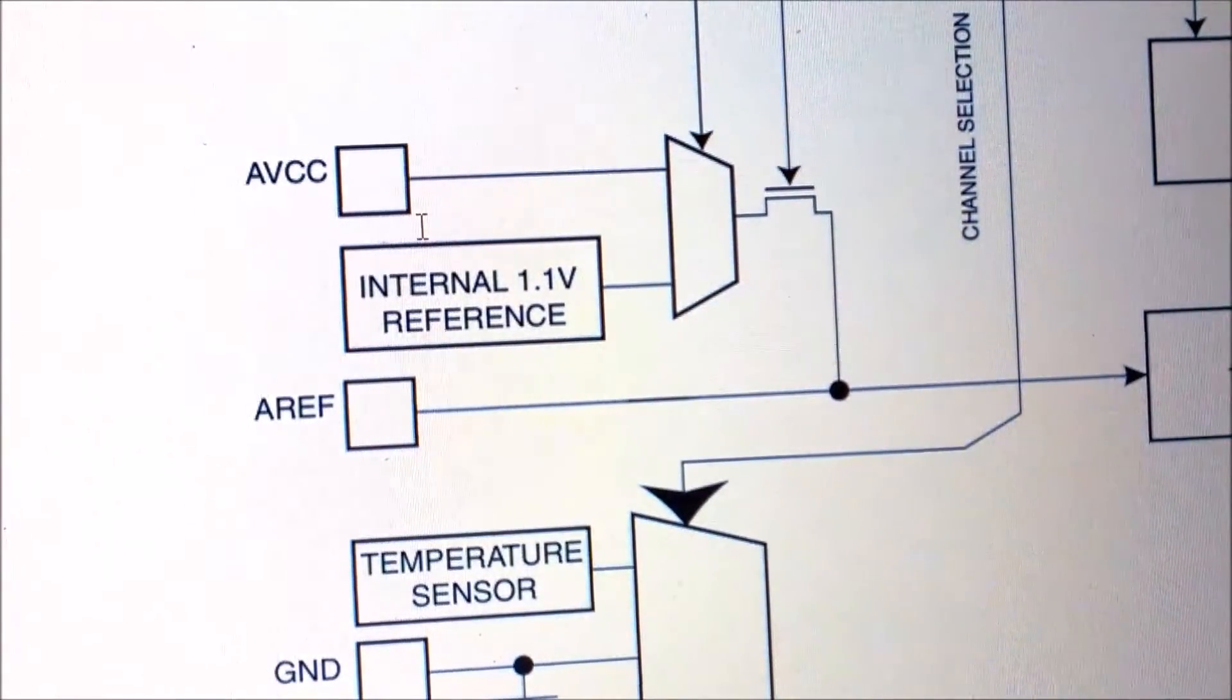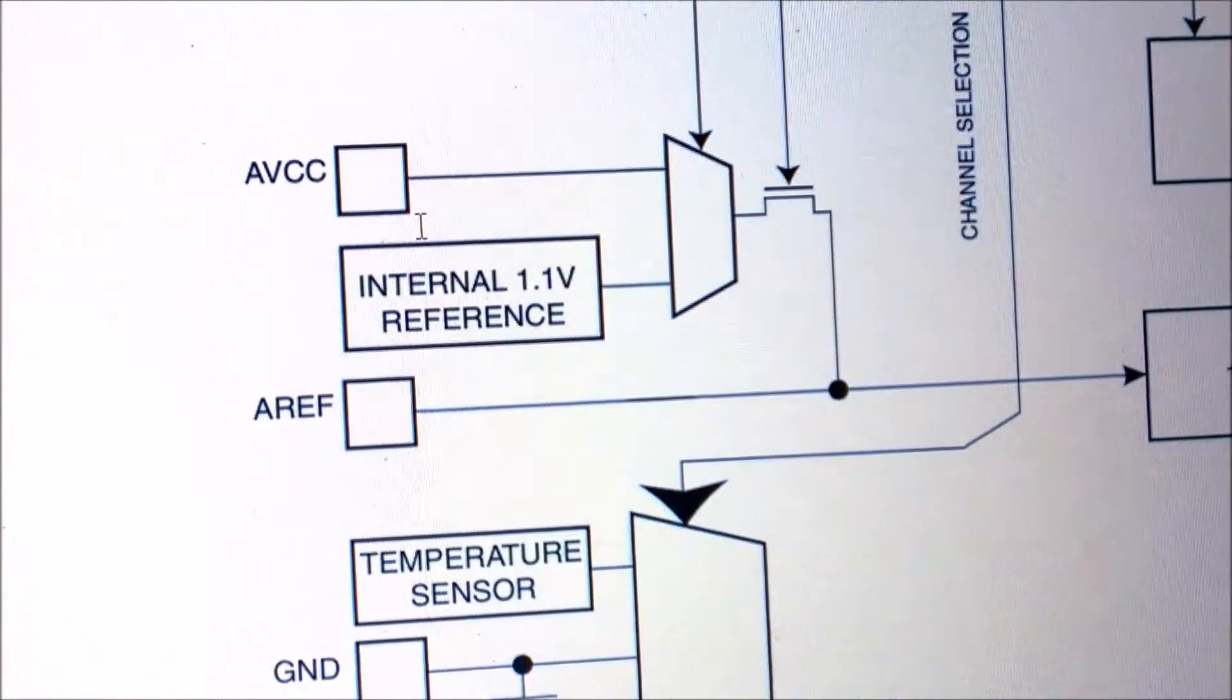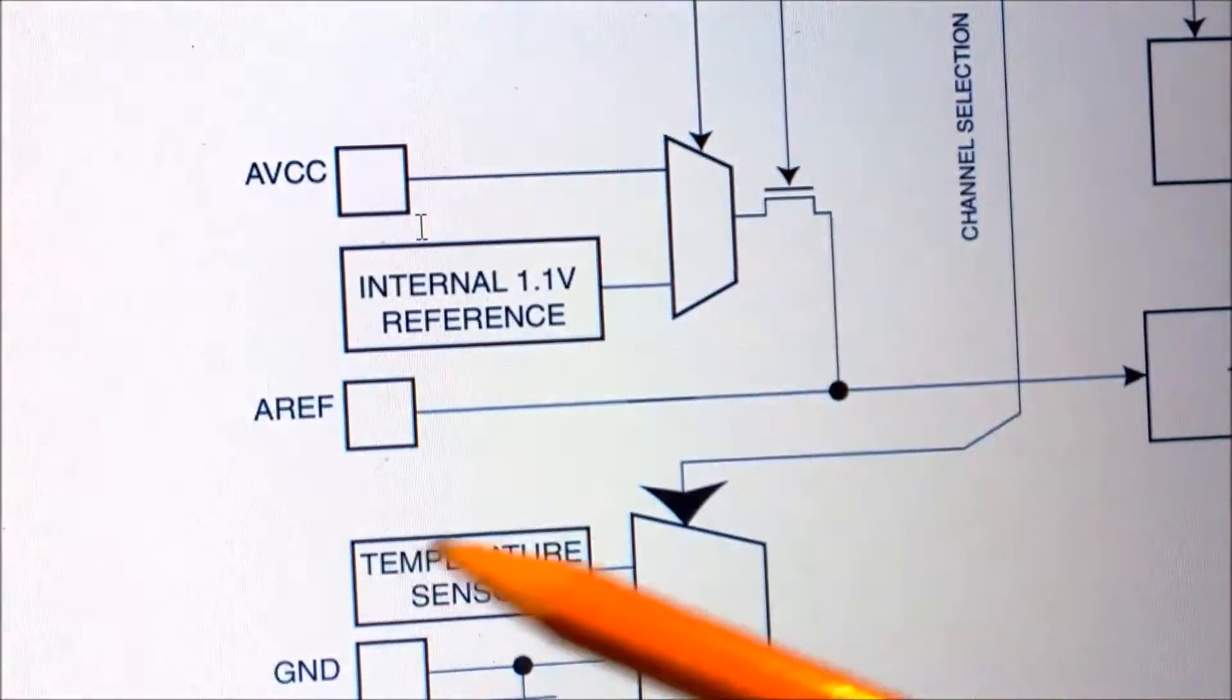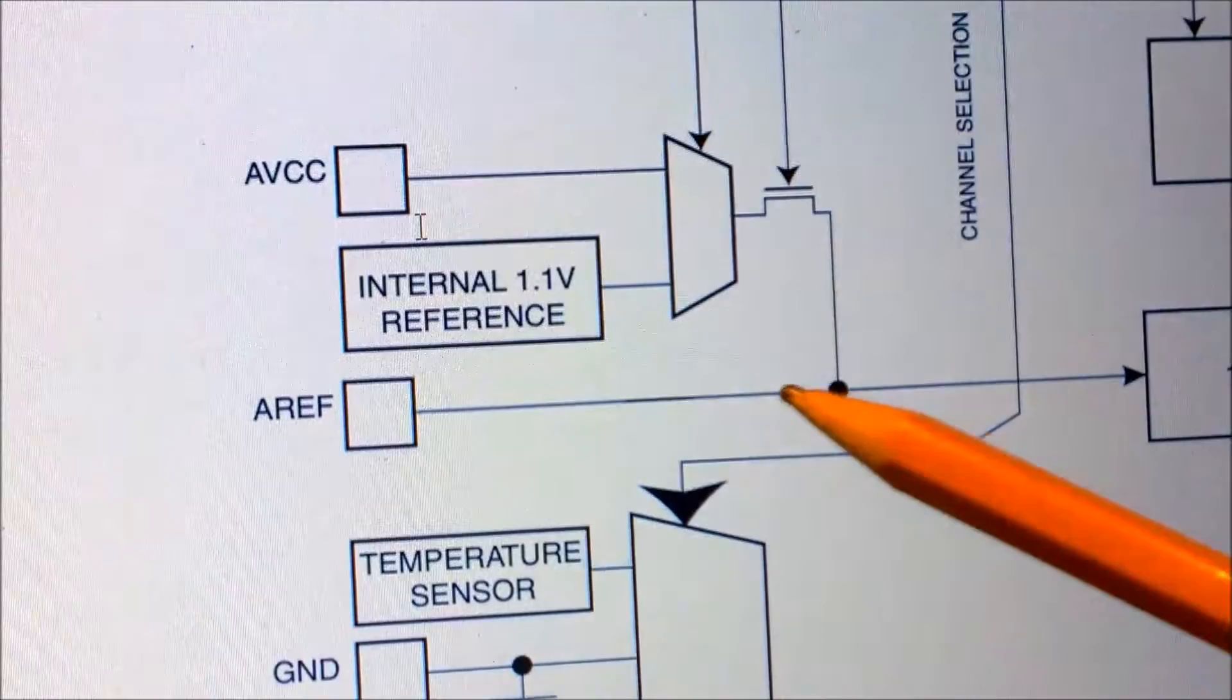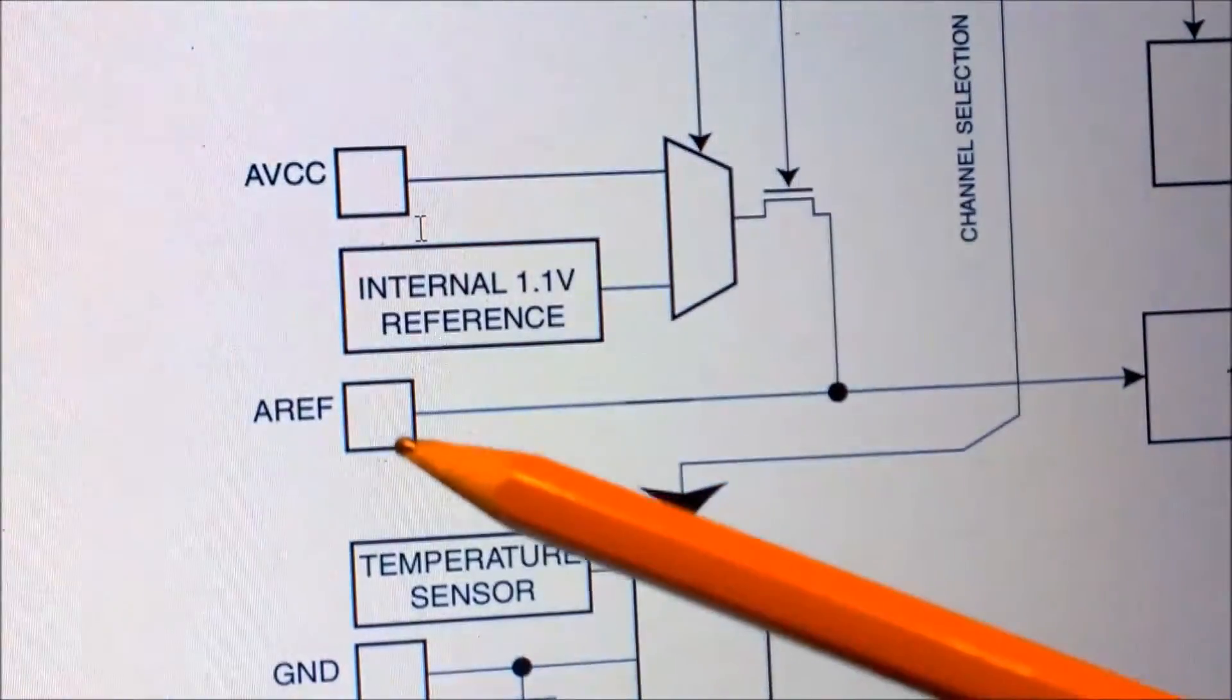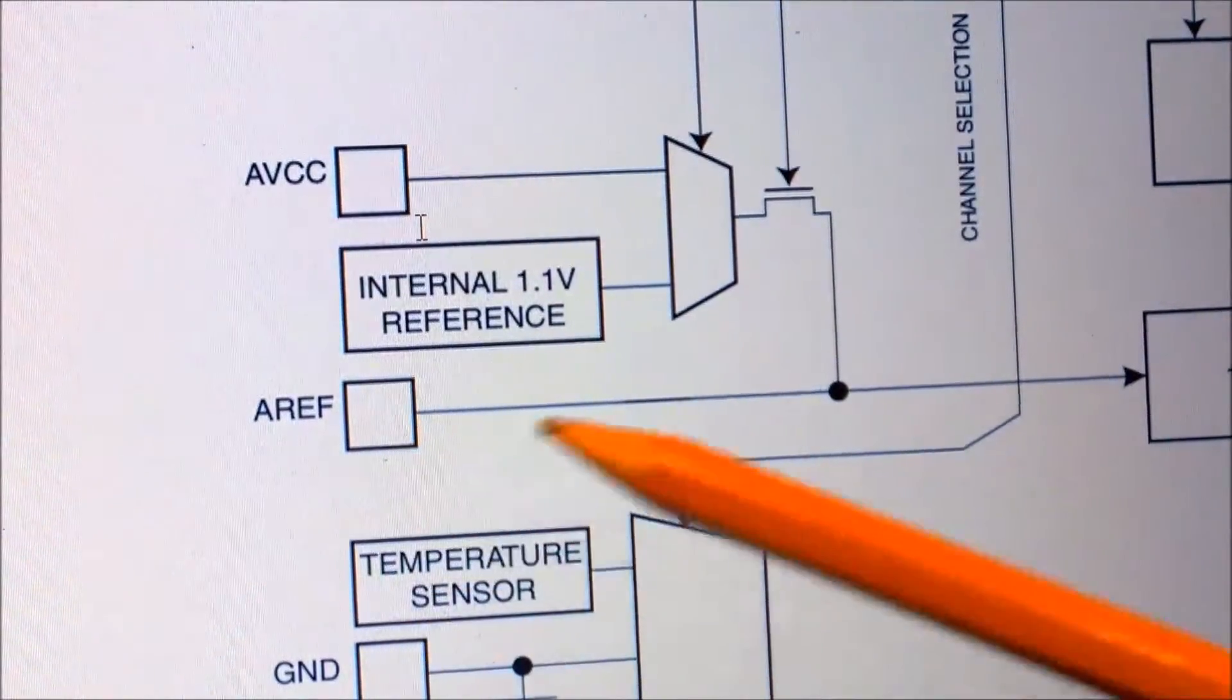In order to check the reference voltage which we have just set as 1.1 volt, an easy test which we can perform is, as you can see in this schematic, this reference voltage is directly connected to the output of this mux. So when I set 1.1 volt reference voltage here, I should be able to read this reference voltage at this AREF pin. So if I put my multimeter between AREF and ground, I should be able to read the reference voltage. Let's try it.